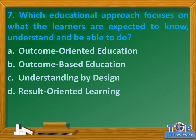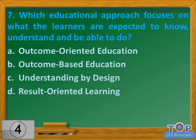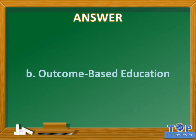Question number seven: Which educational approach focuses on what the learners are expected to know, understand, and be able to do? A. Outcome-oriented education. B. Outcome-based education. C. Understanding by design. D. Result-oriented learning. Answer: B. Outcome-based education.